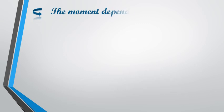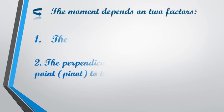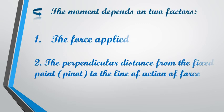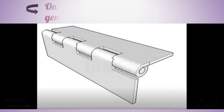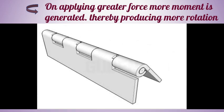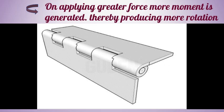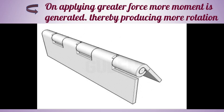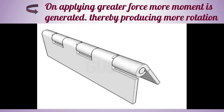This moment of force depends on two factors. First, the force applied, and second, the perpendicular distance from the fixed point to the line of action of force. The moment of force depends on the force applied — if we apply more force, then more turning effect will be produced. For example, if you open the door with a greater force, then more turning effect is produced in the door.